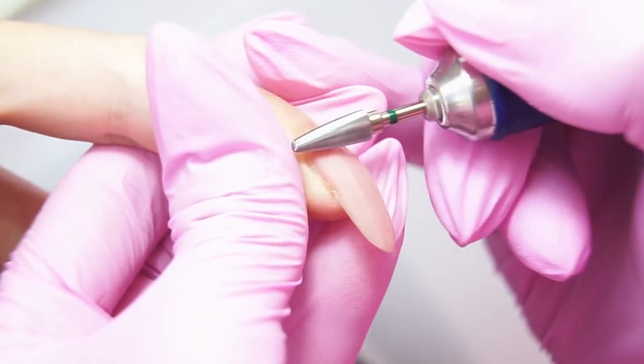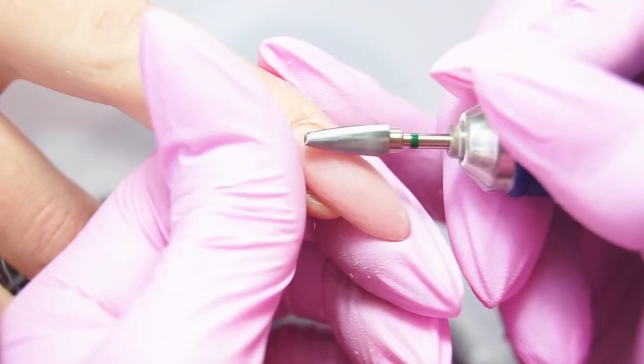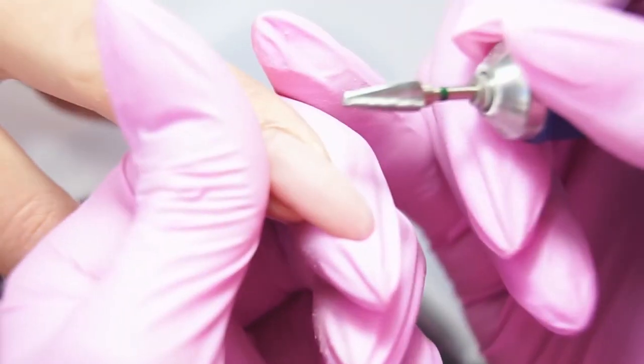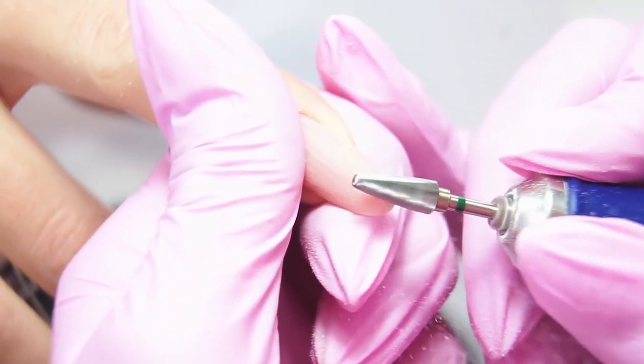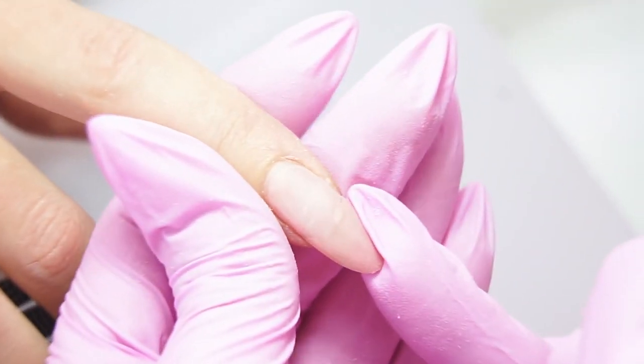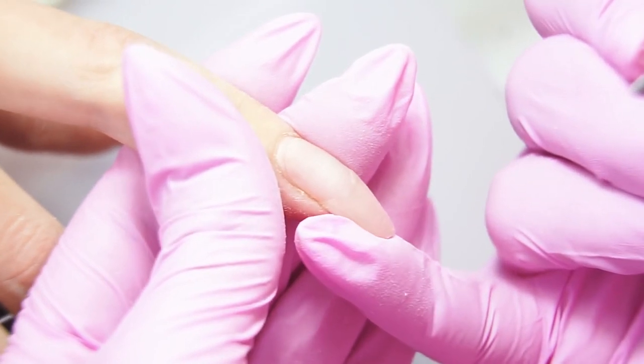I start removing the gel polish with a carbide drill bit. I can see very big cracks on the index finger while removing the coating. There is no point in fixing this nail. It's easier to cut it off and build up again, because it grows down badly.